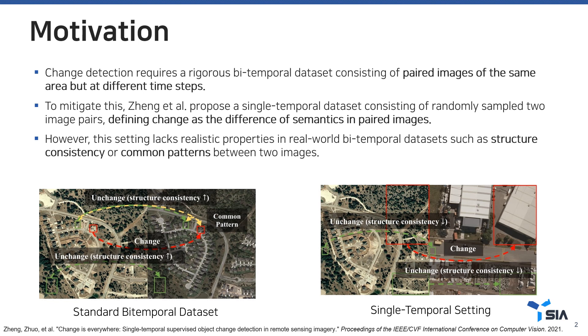However, this setting lacks realistic properties such as structural consistency or common patterns between two images. In bi-temporal datasets, the post-image preserves most pre-image properties except for the change area, while the single-temporal dataset does not.